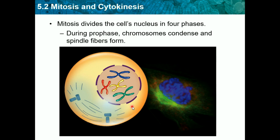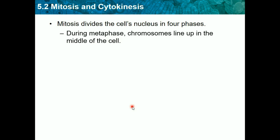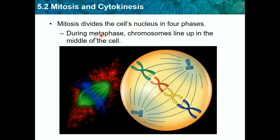The steps of mitosis are remembered using PMAT: P is prophase, M is metaphase, A is anaphase, and T is telophase. During metaphase — the M in PMAT — chromosomes line up in the middle of the cell. A good way to remember this: metaphase has an M in it, and so does 'middle.' In the image of metaphase, there is no more nucleus — it has dissolved, the DNA got out, lined up in the center, and the spindle fibers attach onto it.